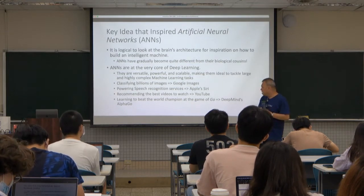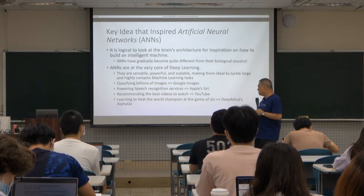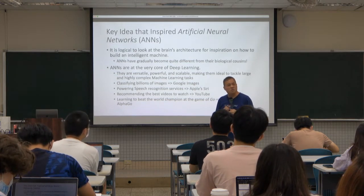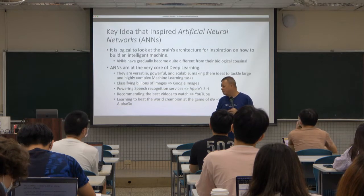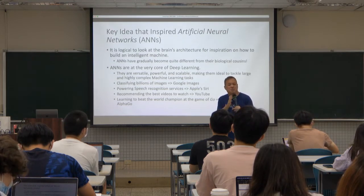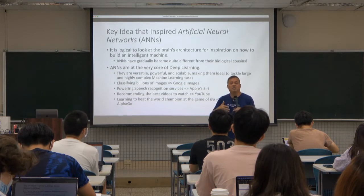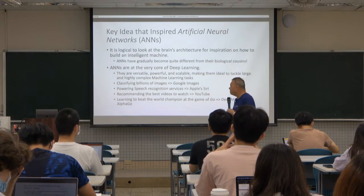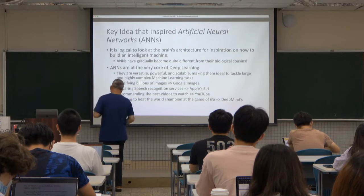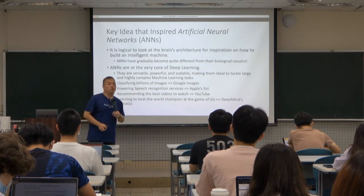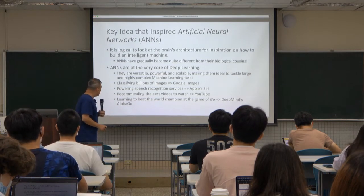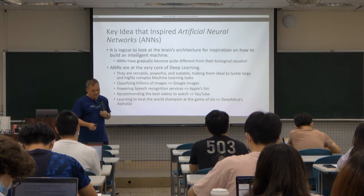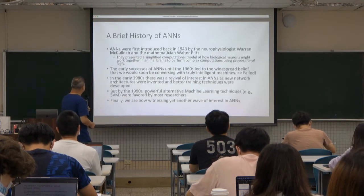You may ask: isn't AlphaGo designed using reinforcement learning? Well, ANN has many different flavors as we will talk about in this class. The reinforcement learning used in AlphaGo is called Deep Reinforcement Learning, which also incorporates artificial neural networks in the design. Just want you to be aware of that.